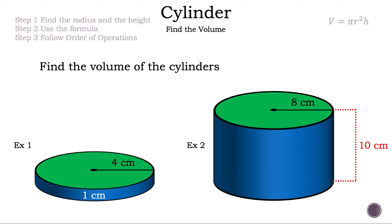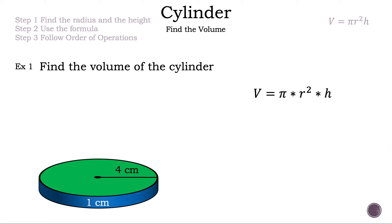Here are the examples that we're going to be discussing in today's video. Let's take a closer look at example one. Now let's read the steps. Step one: find the radius and the height. Step two: use the formula. Step three: follow order of operations.